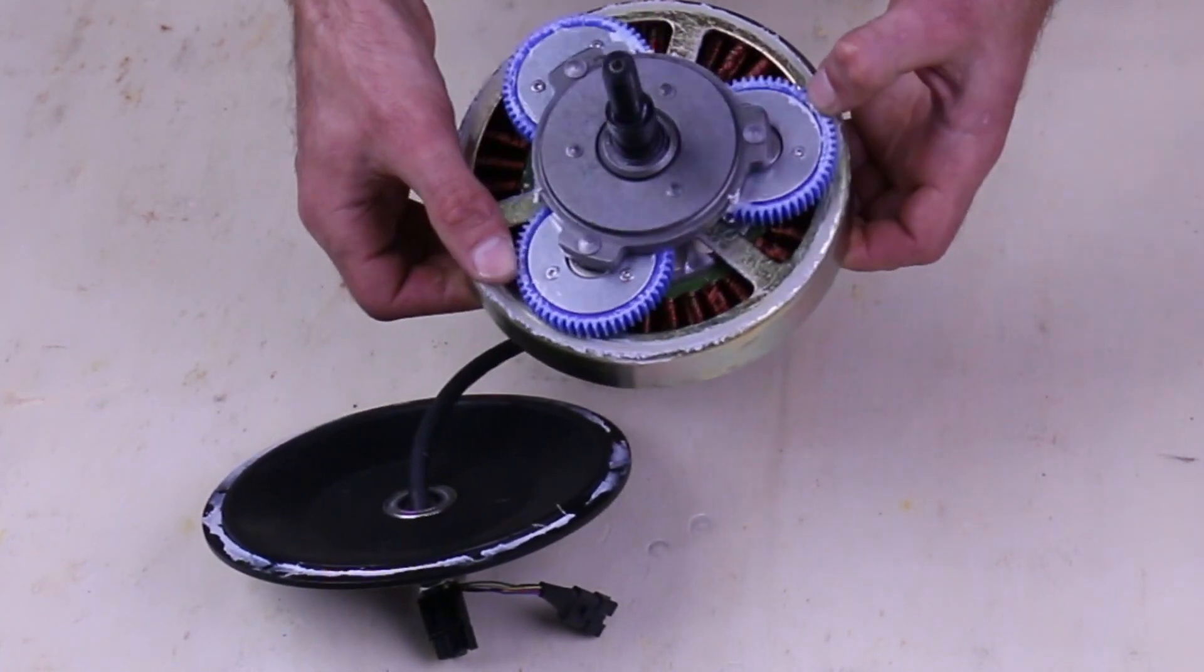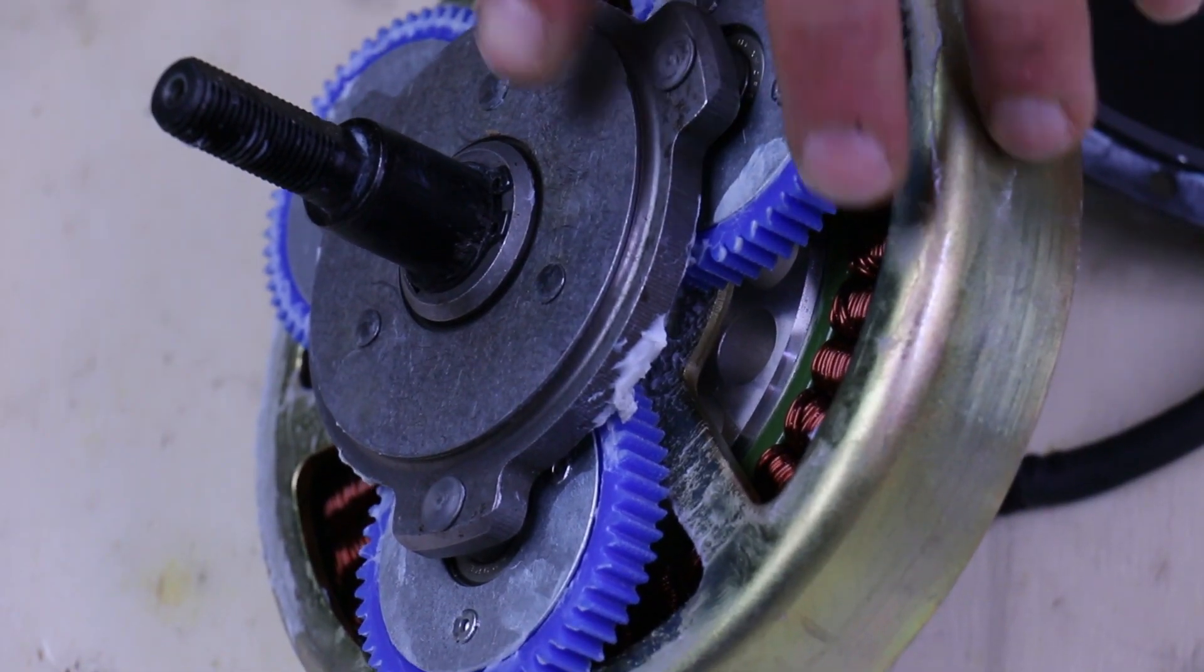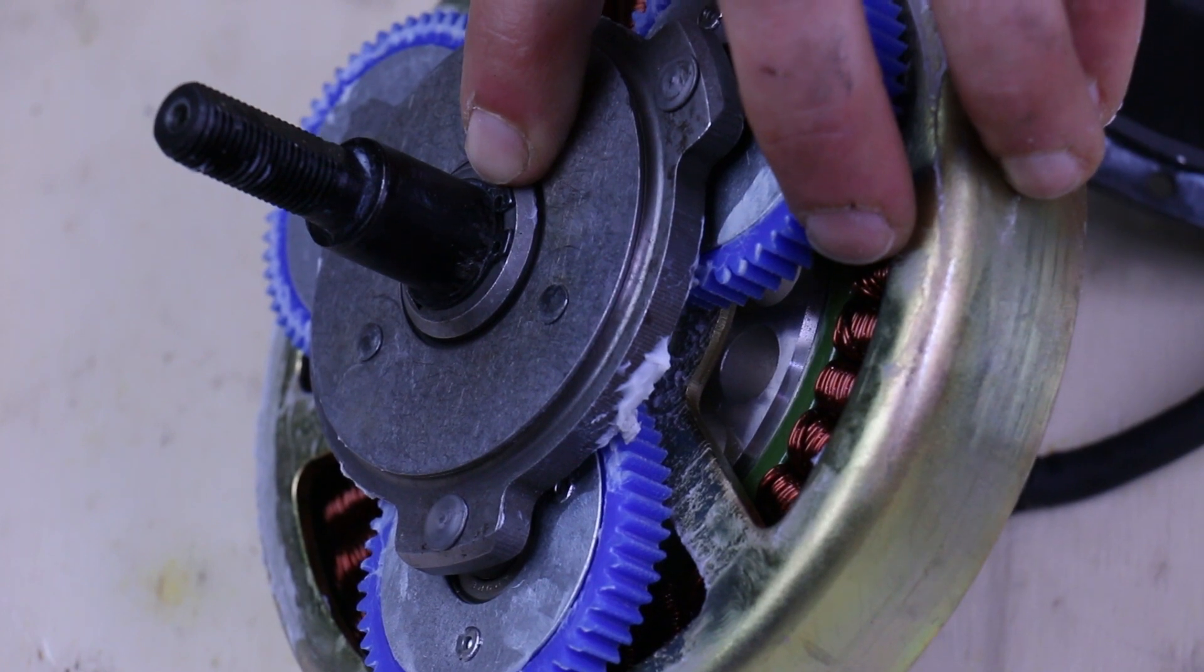Present here is the planetary gear set and the clutch. To remove the freewheel assembly, you need to remove this snap ring, which means you'll need a set of snap ring pliers.